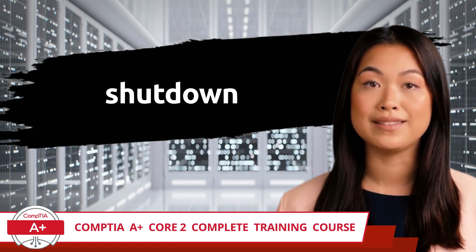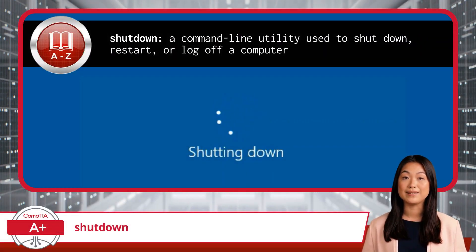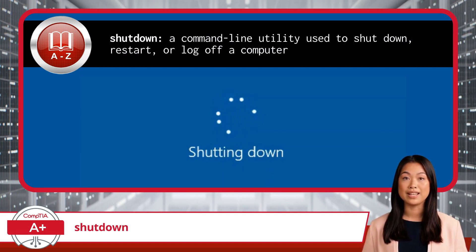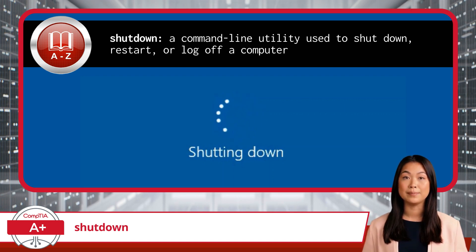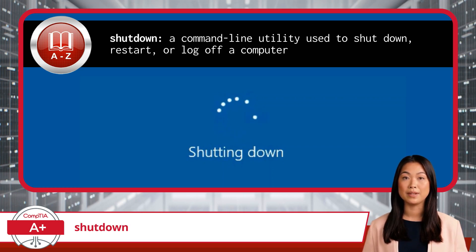Shutdown. The shutdown command is a command line utility used to shut down, restart, or log off a computer. This can be handy for various reasons, such as scheduling a shutdown after a certain period, remotely shutting down a computer on your network, or restarting your machine for updates. It's like setting an alarm clock, but for your computer's power state.